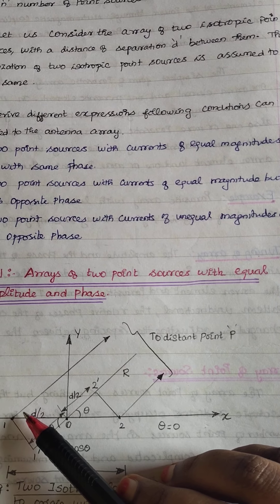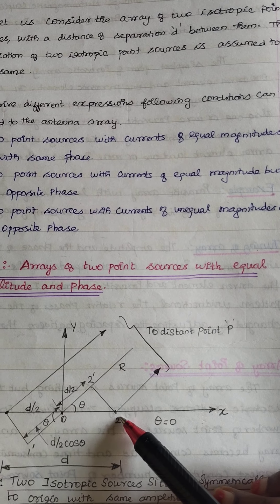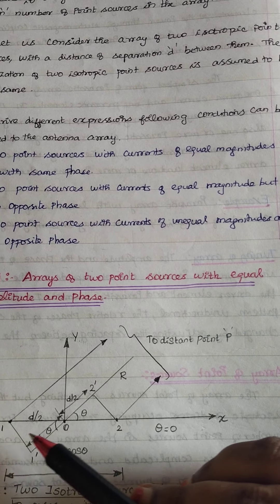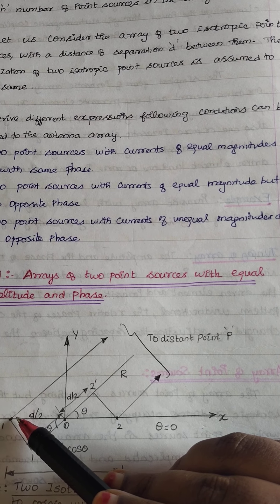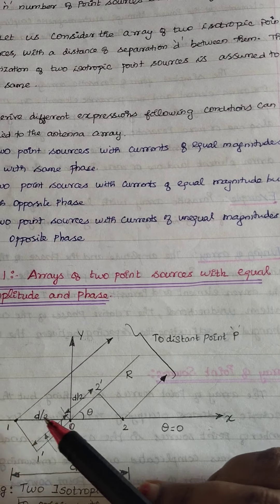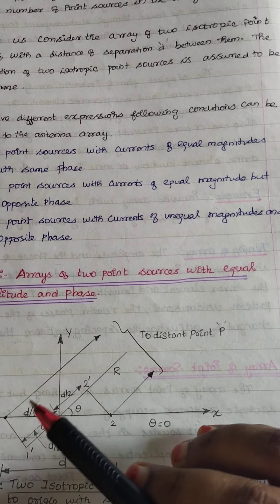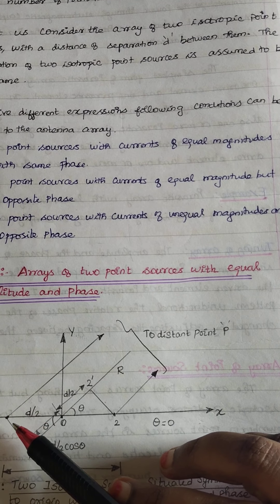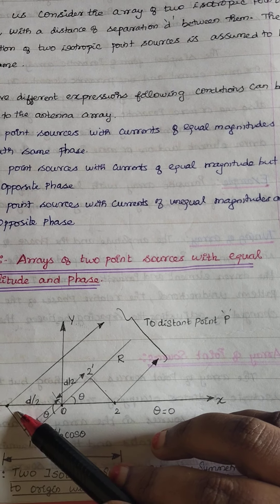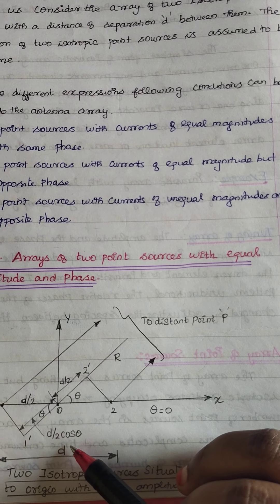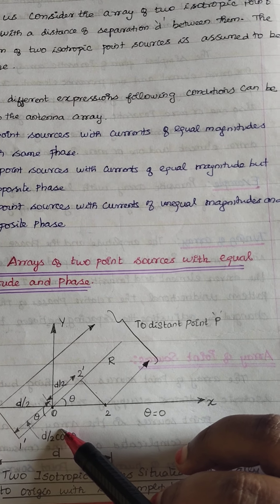Here we have two antennas: number one is the first antenna and this is the second antenna. We are going to analyze how much electric and magnetic field will be radiated from the first and second antenna to a distant point R. The distance between the first and second antenna is considered to be D.